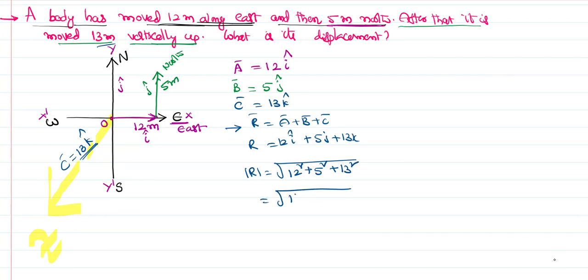12 square is 144, 5 square is 25, 13 square is 169. 144 plus 25 is 169, and this is also 169, that is square root of 2 into 169. That is root of 2 into 13.